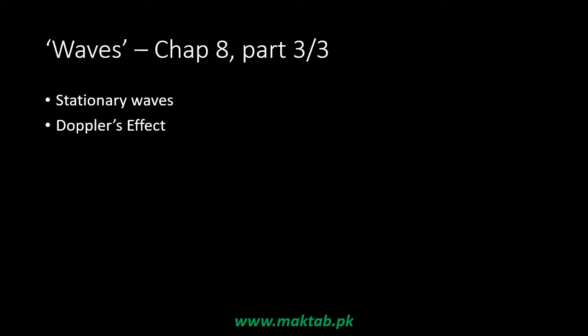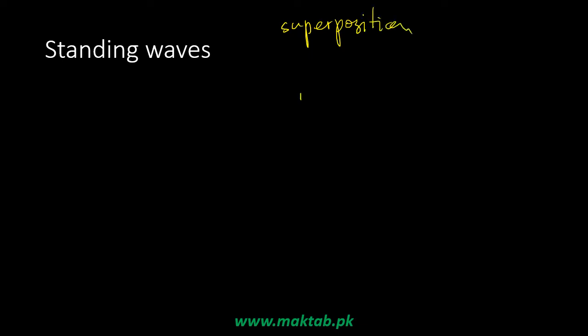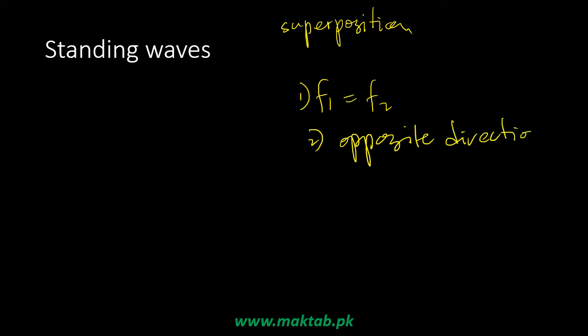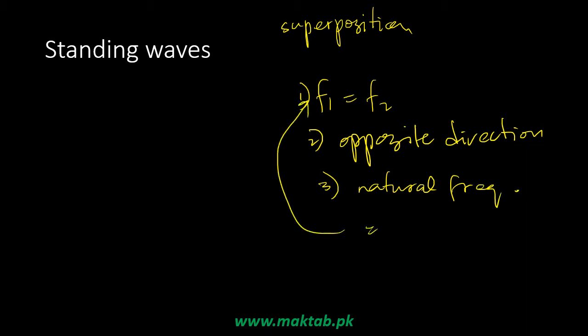This video is the third and last part of Chapter 8, in which we will cover stationary waves and the Doppler effect. When we have three conditions in the superposition, we generate standing waves. We are superposing two waves — if they are the same, if they are in opposite directions, or the medium or instrument waves are passing with the natural frequency so the wave sources match, we generate standing waves.